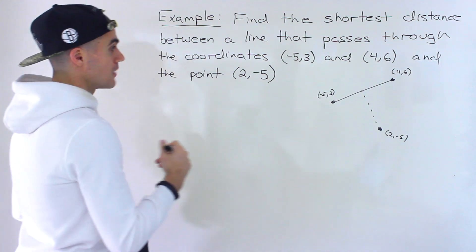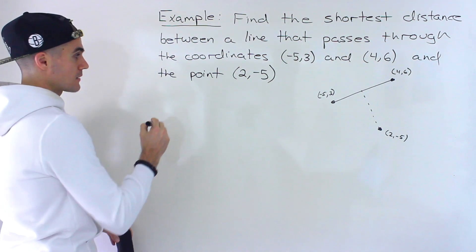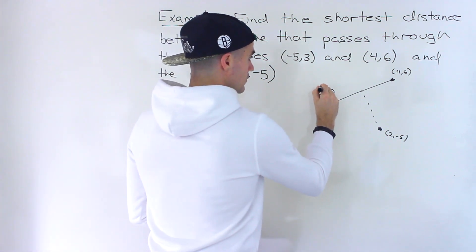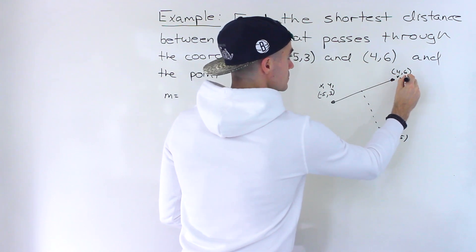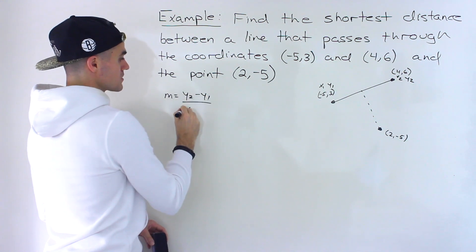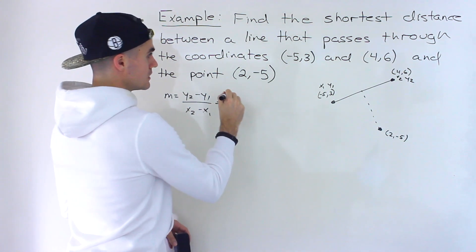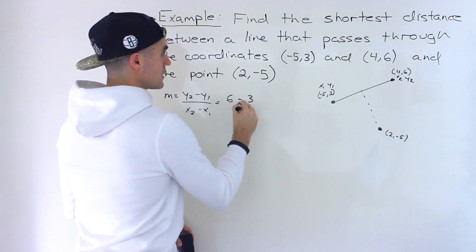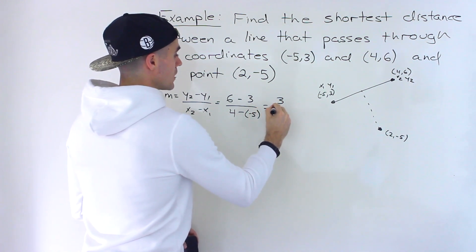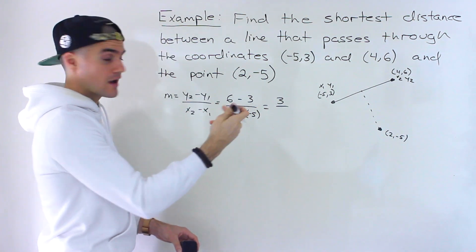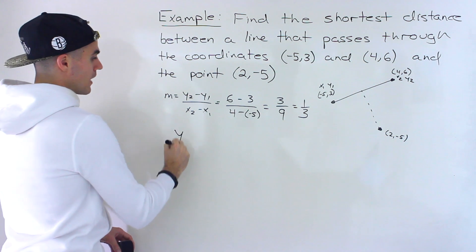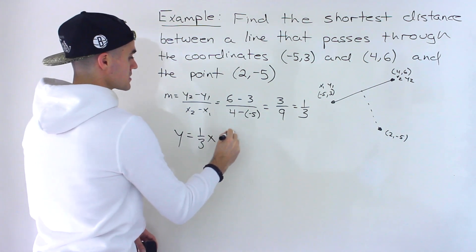First step is finding the equation of this line, then we follow those same other steps we've done in previous examples. To find the equation of that line, I'm first going to find the slope. Label the points x1, y1 and x2, y2. The slope is y2 minus y1 over x2 minus x1, which is 6 minus 3 over 4 minus negative 5, giving us 3 over 4 plus 5, which is 3 over 9, which simplifies to one over three.